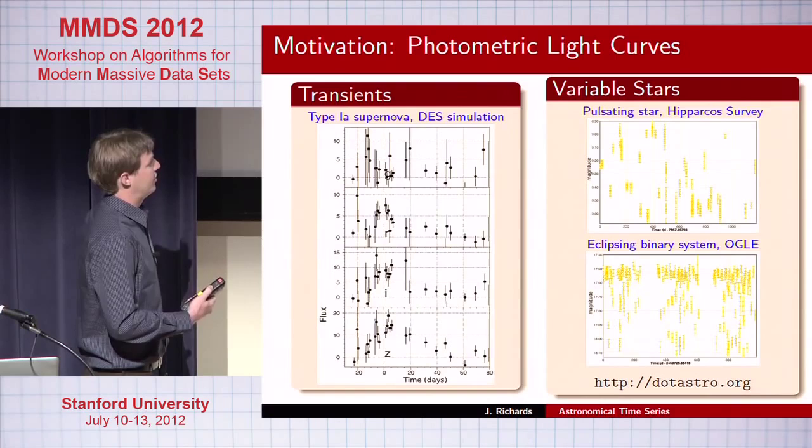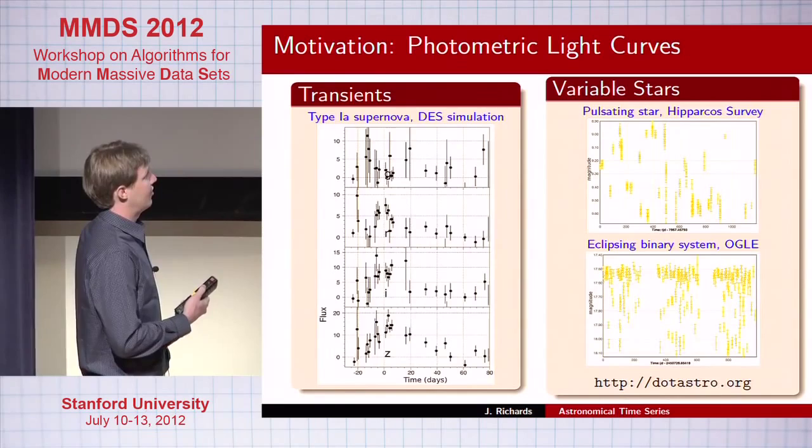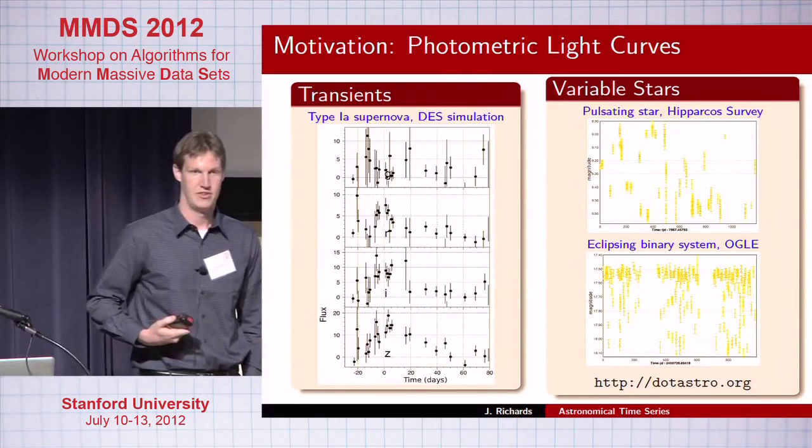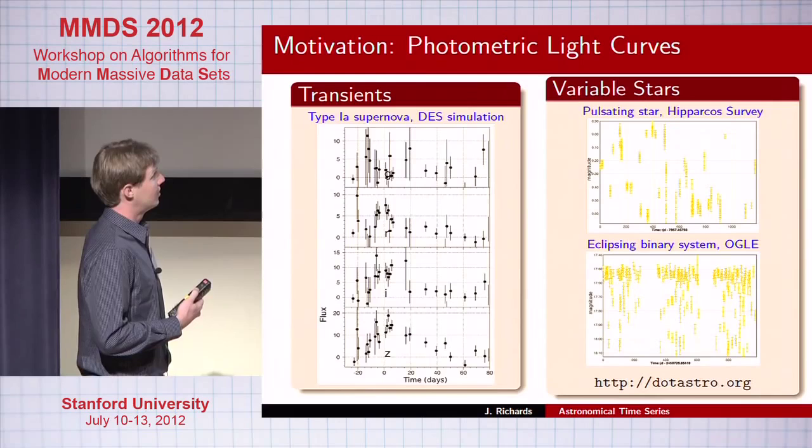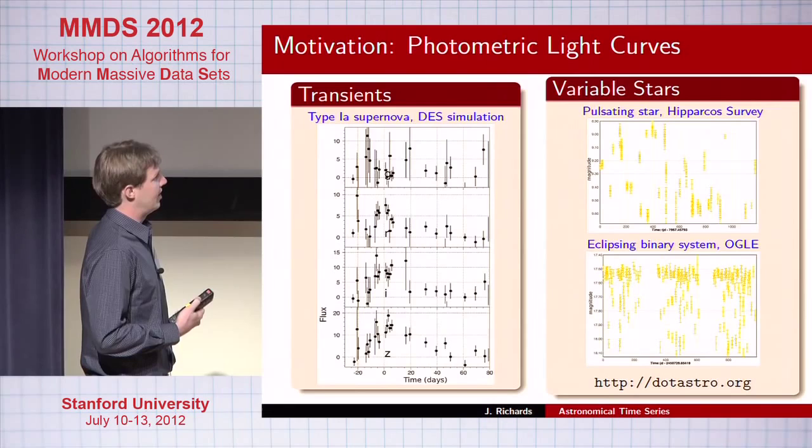We also observe variable stars — objects that for different physical mechanisms change their brightness on time scales from less than a day up to years. This is a pulsating Cepheid variable star, and again, you see it's not evenly spaced data. If you were to phase this on the correct period of pulsation, you would see a nice clean curve.